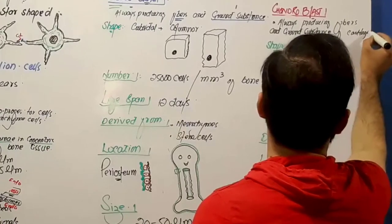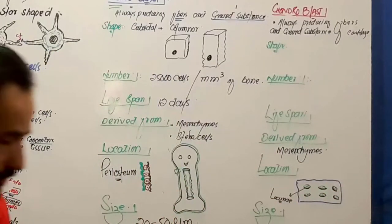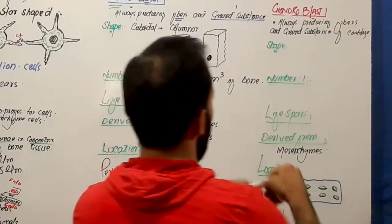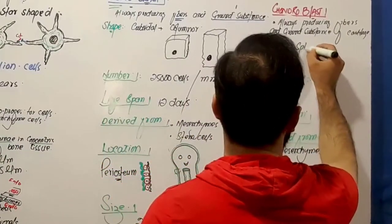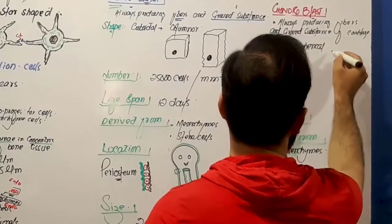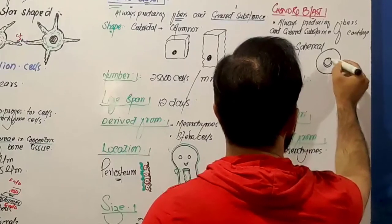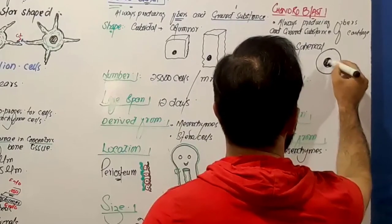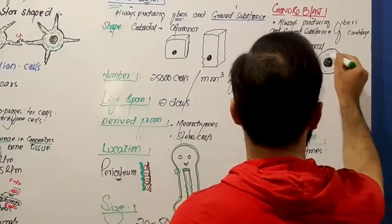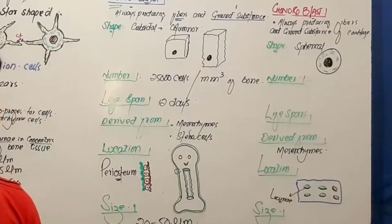These are the cells which are always producing fibers and ground substance of the cartilage, so they are called the chondroblasts. What is their shape? The books have written that they have a spherical shape, so they are a little bit rounded in shape. This is their nucleus and these are their cytoplasmic contents.